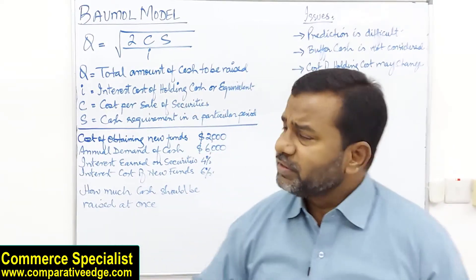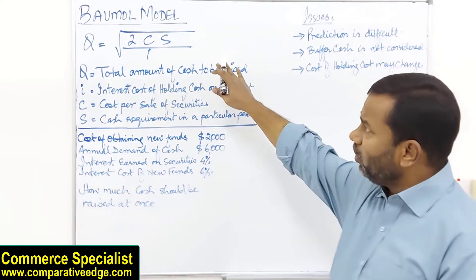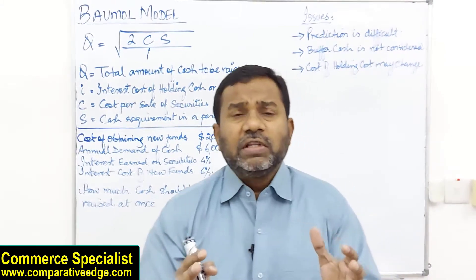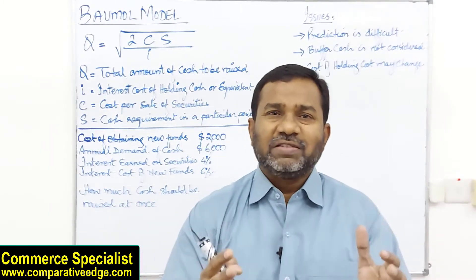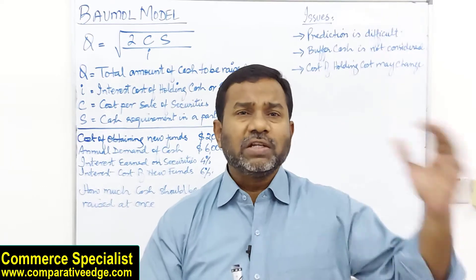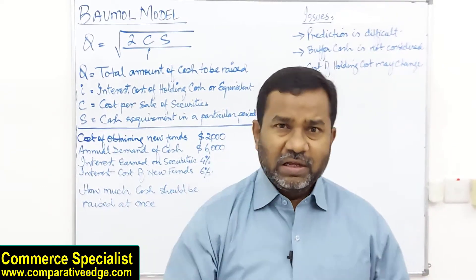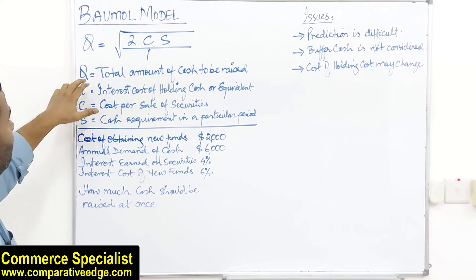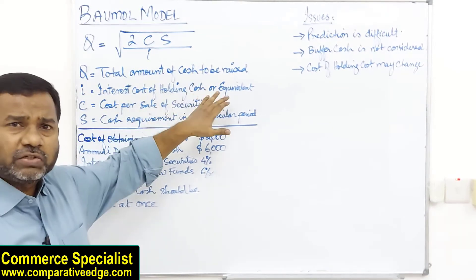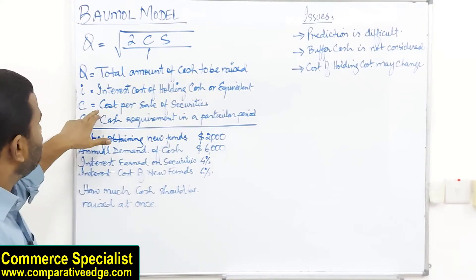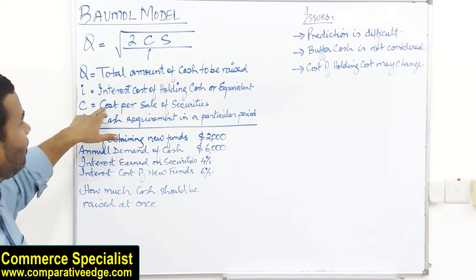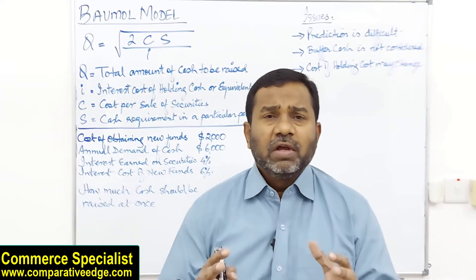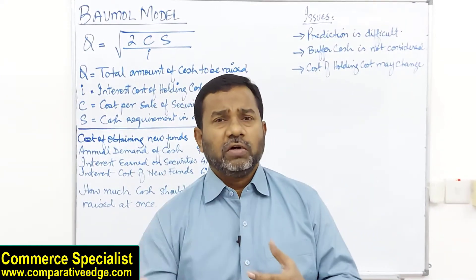Here is the formula of the Baumol model: Q = √(2CS / I), where Q is the amount of cash to be raised in one go — not too much, not too little. I is the interest, which is the cost of holding cash or cash equivalents. C is the cost per sale of security, that is the transaction cost incurred every time you convert securities into cash. S is the cash requirement in a particular period, such as the annual amount.